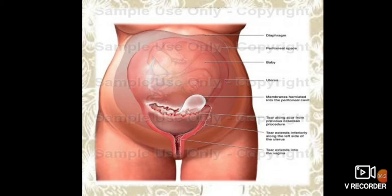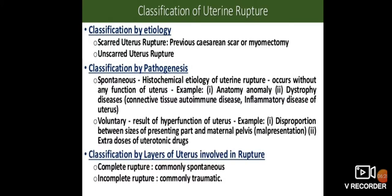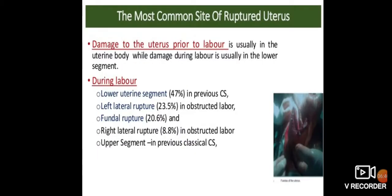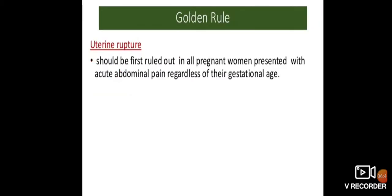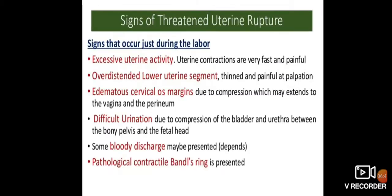This picture shows uterine tear. Classification of uterine rupture is done by three criteria: classification by etiology, classification by pathogenesis, and classification by the layers of the uterus involved in the rupture.